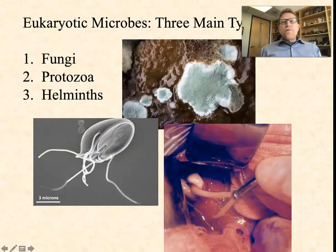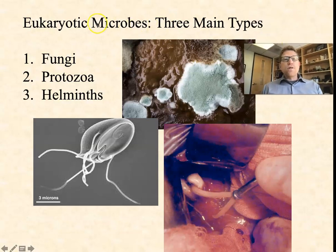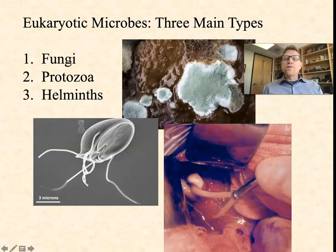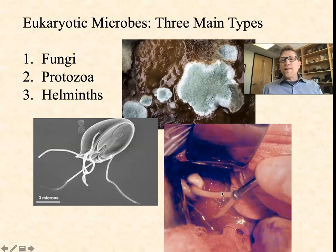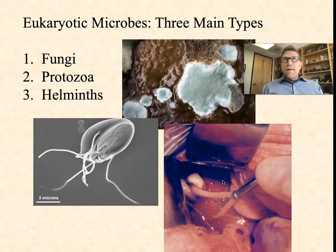So what kinds of eukaryotic pathogens are there? What are the three types of microscopic eukaryotes that can cause infections in humans? Primarily we're talking about fungi, which are the molds and the yeasts. Then protozoa, like this Giardia cell, which is a single-celled organism. And then helminths — a fancy word for small worms, although they can get pretty large. Here's a liver fluke being removed from a patient's liver. The helminths are included because their egg and larval stages are typically microscopic and often infectious.